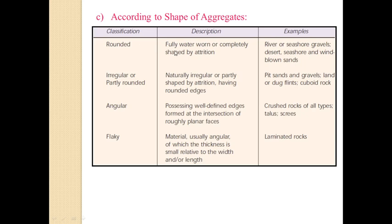First is rounded aggregate — fully water-worn or completely shaped by attrition. Rounded aggregates are found in river or seashore gravels, desert, seashore, and windblown sand. Next is irregular or partially rounded aggregate — naturally irregular or partially shaped by attrition, having rounded edges. Examples of this irregular shape include pit sands and gravels, and land or flints, that is cuboid rock.